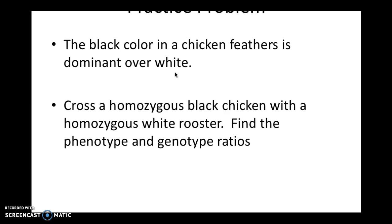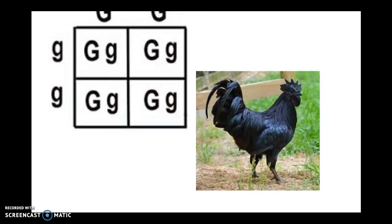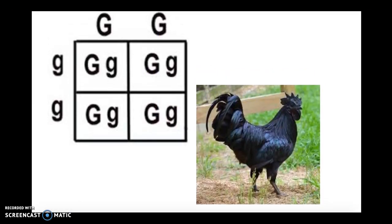Don't pick C, because you can't tell the difference between a big C and a little C. Maybe try the letter B or something. So here is my example — you should have done big G, big G crossed with little G, little G. All of the babies are going to be heterozygous, meaning they have a big and a little letter. Because I'm adhering to the principle of dominance, the big is going to cover up the little, so the black is going to cover up the white, and I'm going to get a black chicken. Disclaimer: I don't actually know how chicken color is inherited, but this makes a good example.